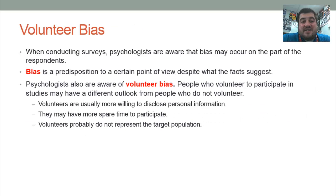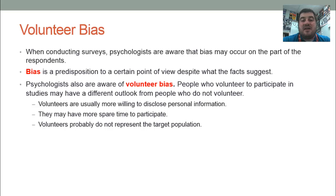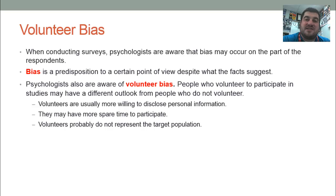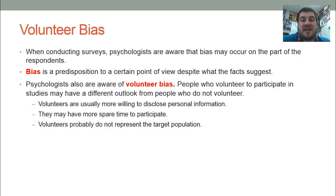Lastly, volunteer bias occurs on the part of respondents when conducting surveys. Bias is a predisposition to a certain point of view, and volunteer bias means that people who volunteer to participate in studies may have something about them that makes them different from people who do not volunteer. The polls on sites like ESPN.com and CNN.com always say 'this is not a scientific poll' — that's because the only people responding are the ones that choose to respond, and they may not have the same attitudes as others. Volunteers are more willing to disclose personal information, may have more spare time to participate, and have different outlooks on jobs and money — so volunteers probably do not represent the entire target population.